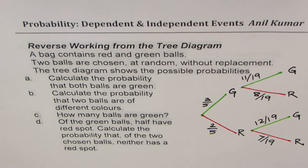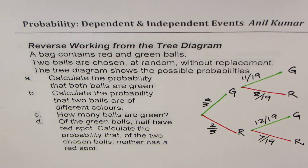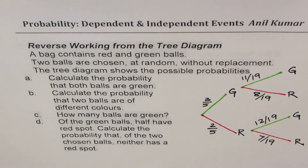I am Anil Kumar sharing with you a question from my subscriber Iroom. Iroom, thanks a lot for posting this brilliant question. It gives me an opportunity to show how to work in the reverse order from a tree diagram where the probability is given and we are trying to figure out how many items or objects were there. This question also has a very special twist in part D, so let's get into it and I hope many of my subscribers will benefit.